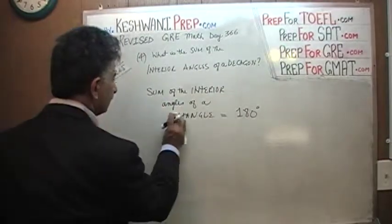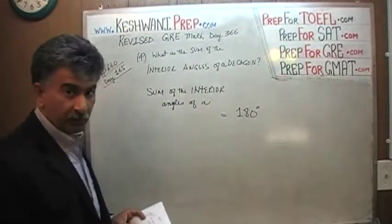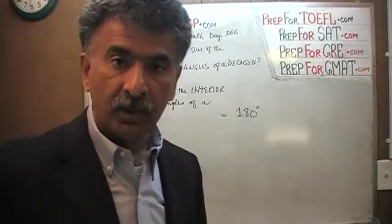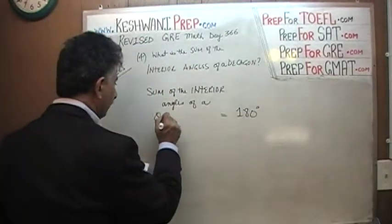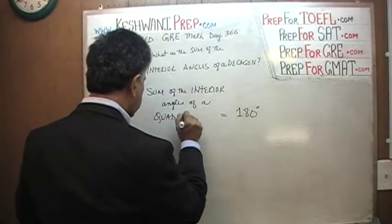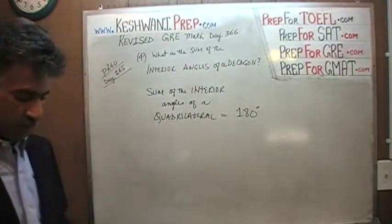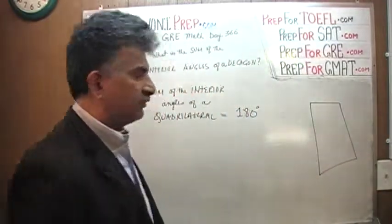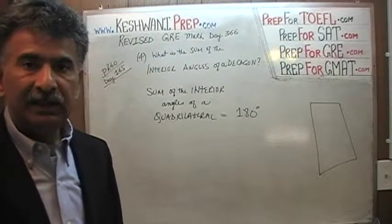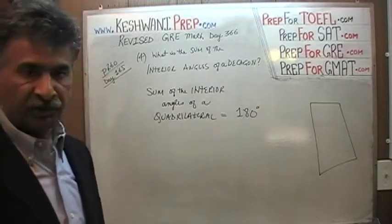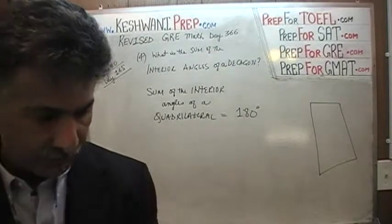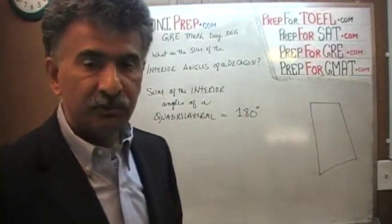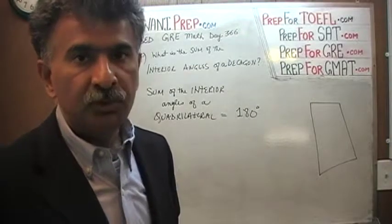What about a four-sided figure? The sum of the interior angles of a four-sided figure — what do we call a four-sided figure? Any four-sided figure. It doesn't need to be a square, a rectangle, or a parallelogram. It could be any four-sided figure. A four-sided figure is called a quadrilateral. On close inspection, we realize that a four-sided figure is nothing more than a union of two triangles — a quadrilateral is nothing more than a union of two triangles.